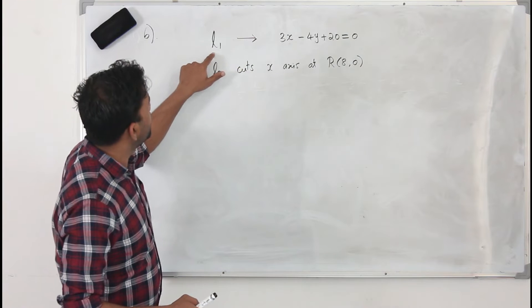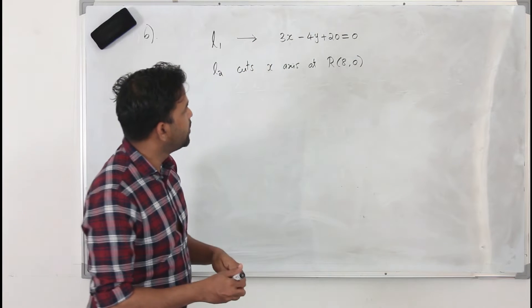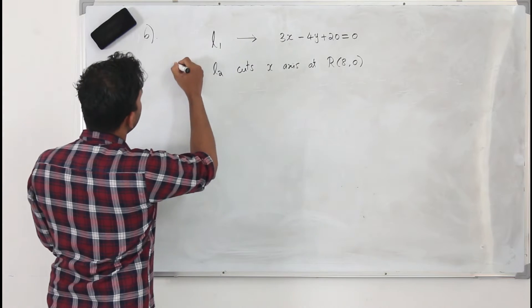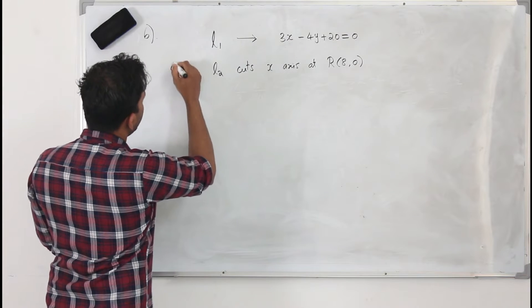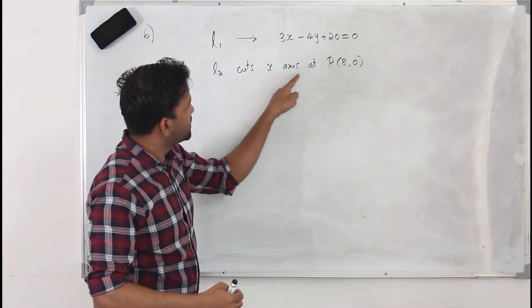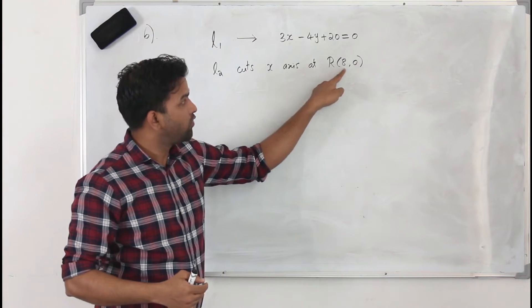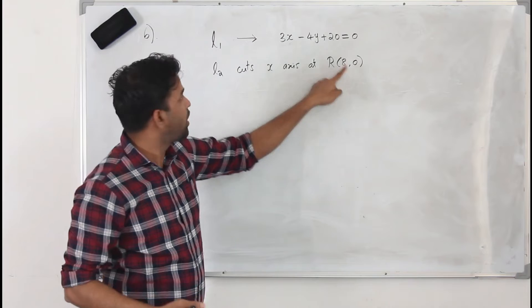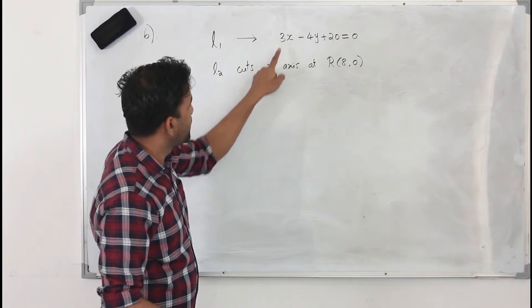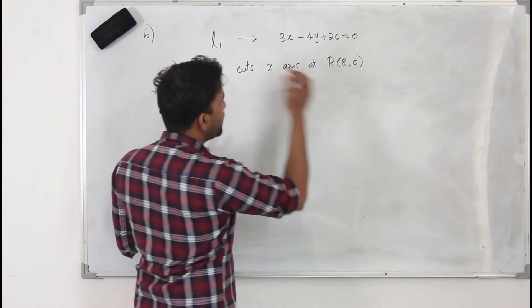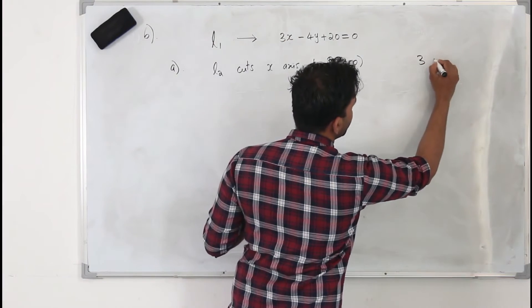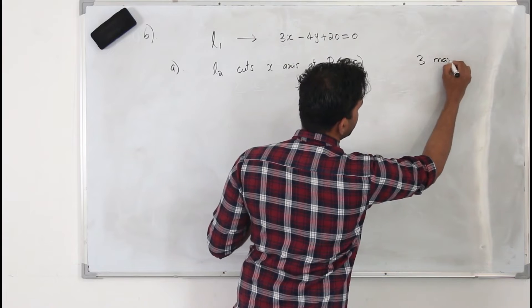L1's equation is given, and L2 cuts the x-axis at R of (8, 0) and is parallel to L1. We need to find the equation of L2. This part has 3 marks.